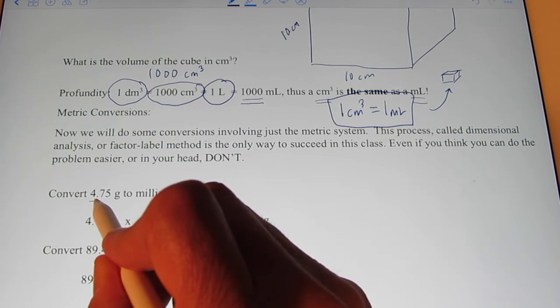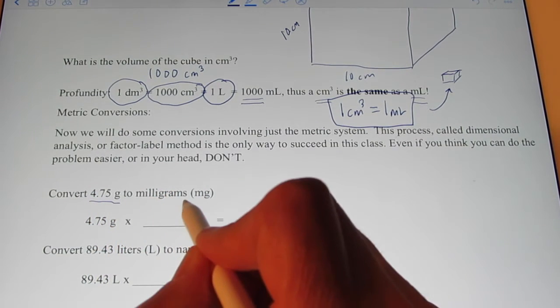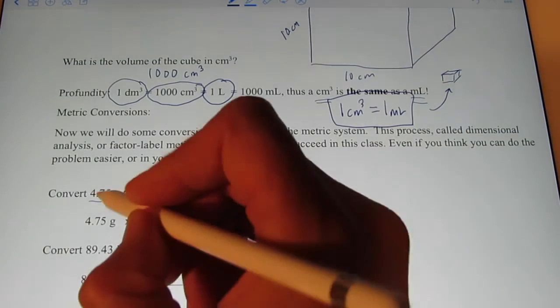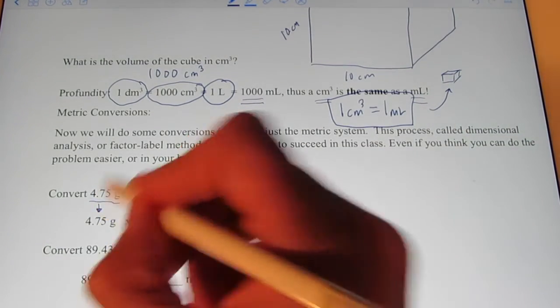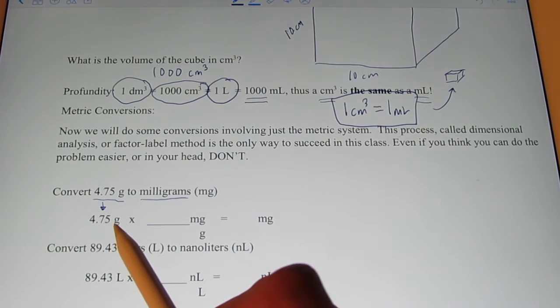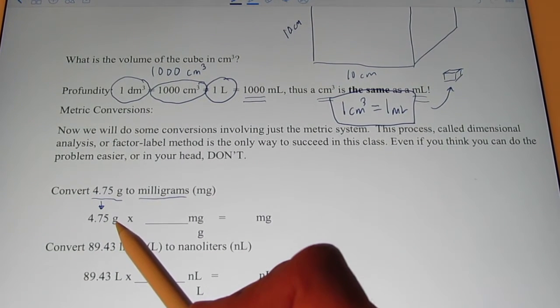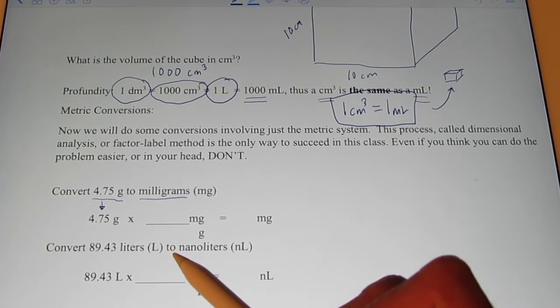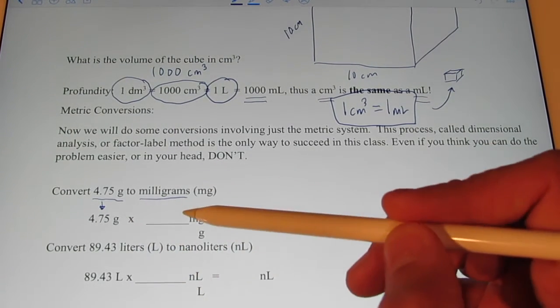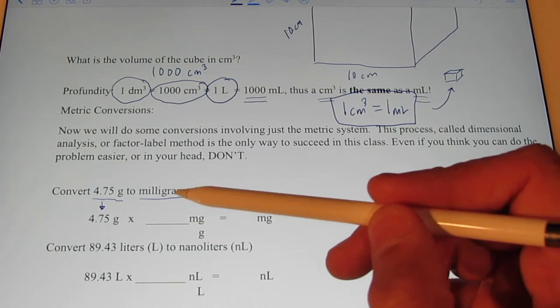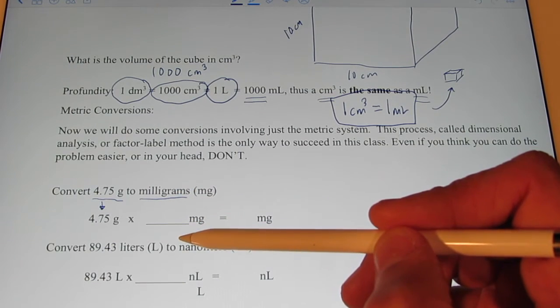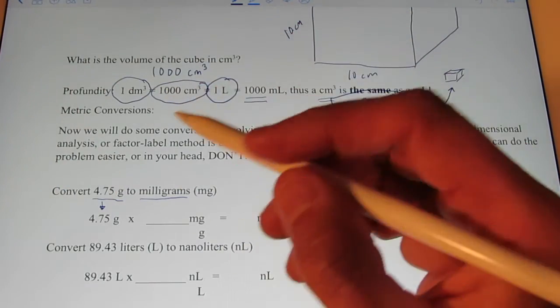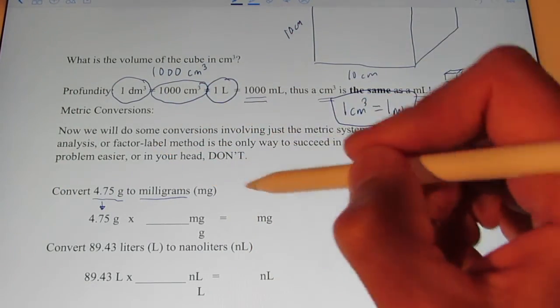Let's say I want to convert 4.75 grams into milligrams. So, I start by writing down what I know: 4.75 grams. Don't forget the unit. And we multiply by a conversion factor. A conversion factor has the same quantity on the top as it does on the bottom. The unit might be different, but the quantity is the same.